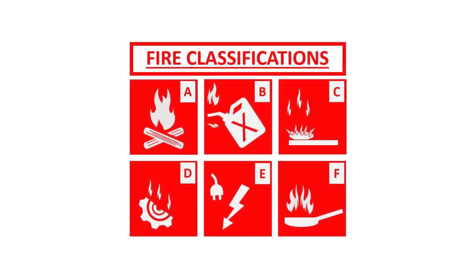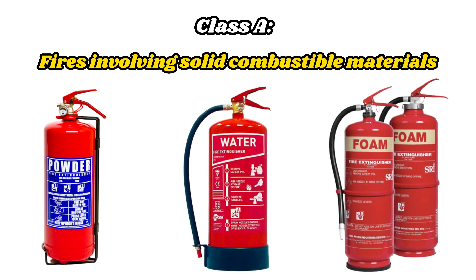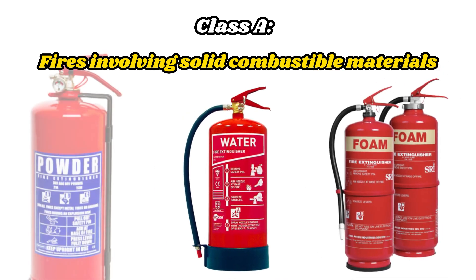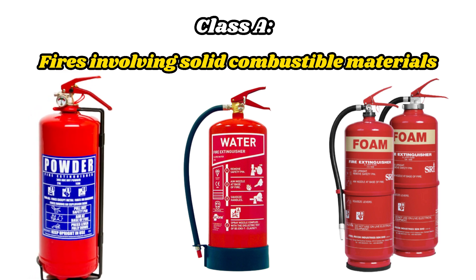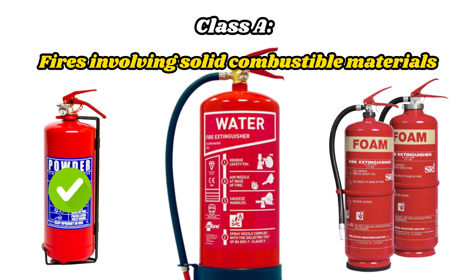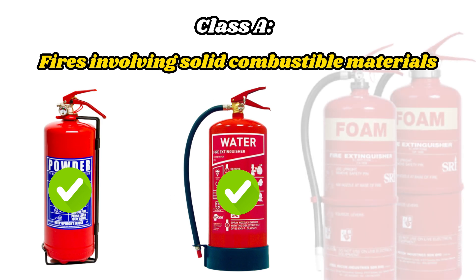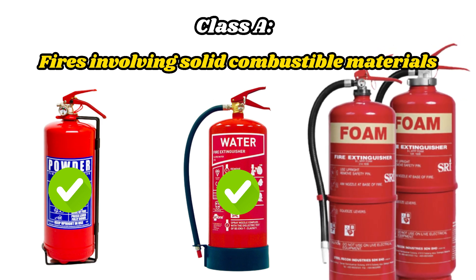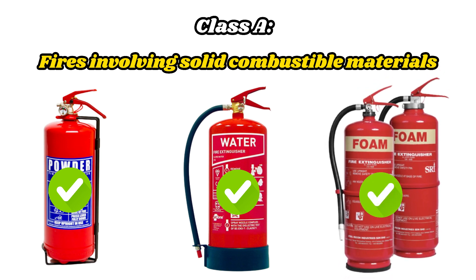Class A fires can be extinguished with powder, water, and foam fire extinguishers. A powder fire extinguisher contains ammonium phosphate, which forms a layer that prevents oxygen from reaching the burning objects and lowers the temperature to the point where combustion stops. A foam fire extinguisher contains foam-forming agents, which not only cools the surface but also prevents oxygen from reaching the burning material.